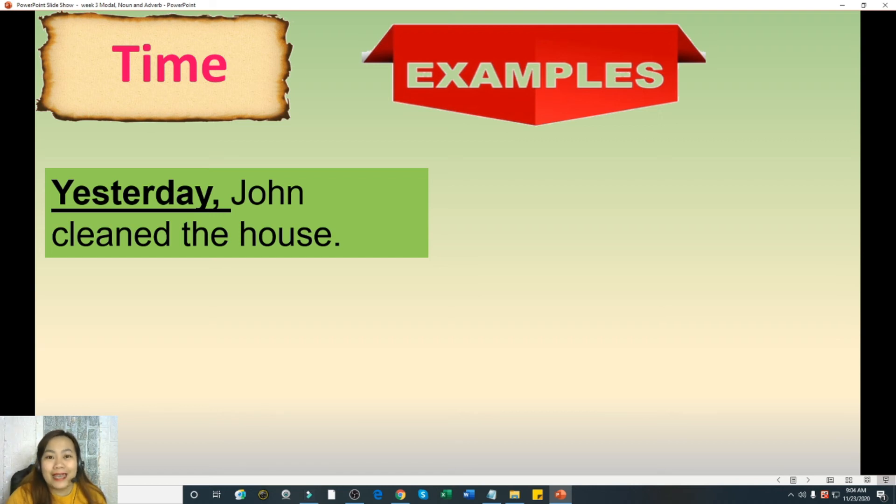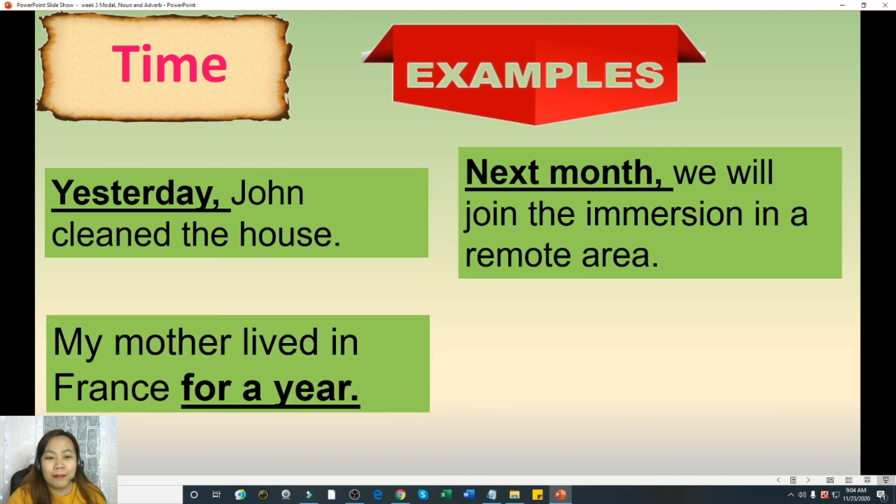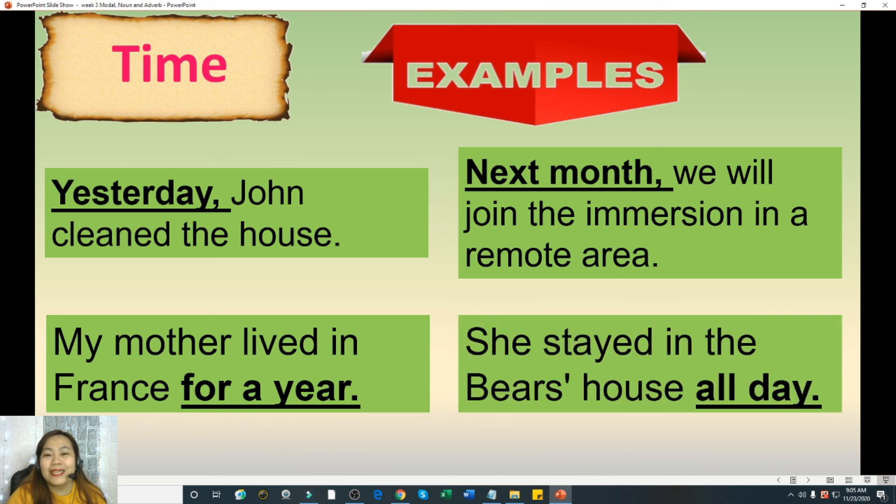Another, next month we will join the immersion in a remote area. Our question, when will we join the immersion in a remote area? The answer is next month and again it answers the question when. Another example is my mother lived in France for a year. So in this sentence it answers the question how long. So our question would be, how long did my mother live in France? For a year. Another sentence is she stayed in the Bear's house all day. How long did she stay in the Bear's house? The answer is all day. So in the last two sentences you notice that we answer the question how long and they are adverbs of time.